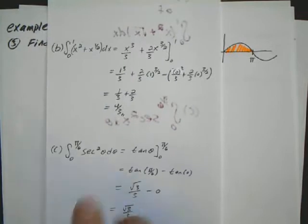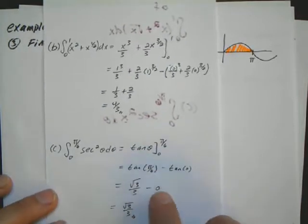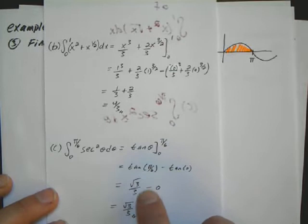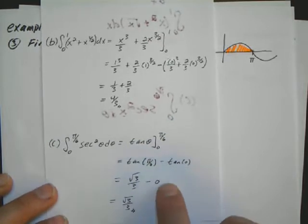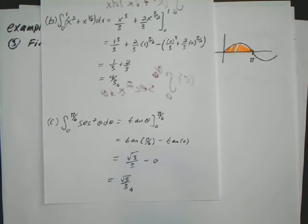And for C, the antiderivative of secant squared is tangent. And when you plug in pi over 6, tangent of pi over 6 is radical 3 over 3. And the tangent of 0 is 0. So your answer is just radical 3 over 3.